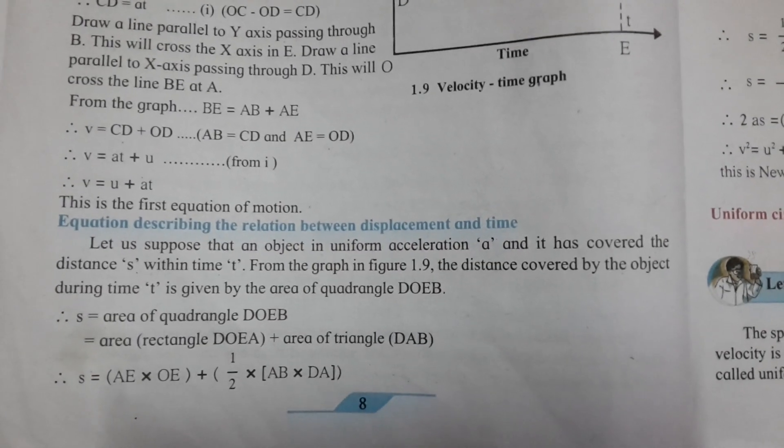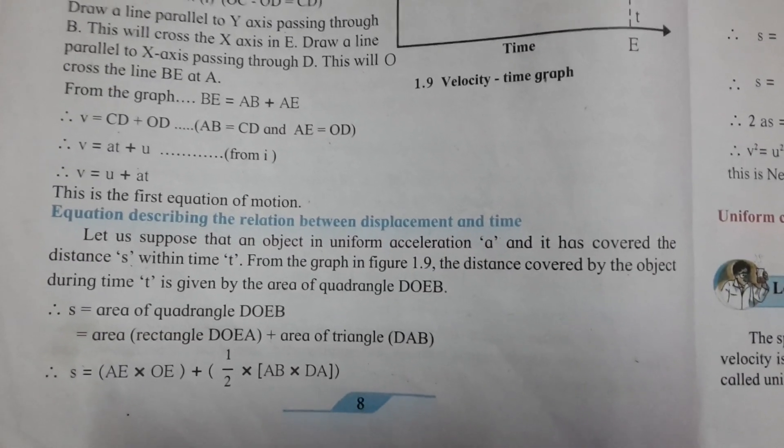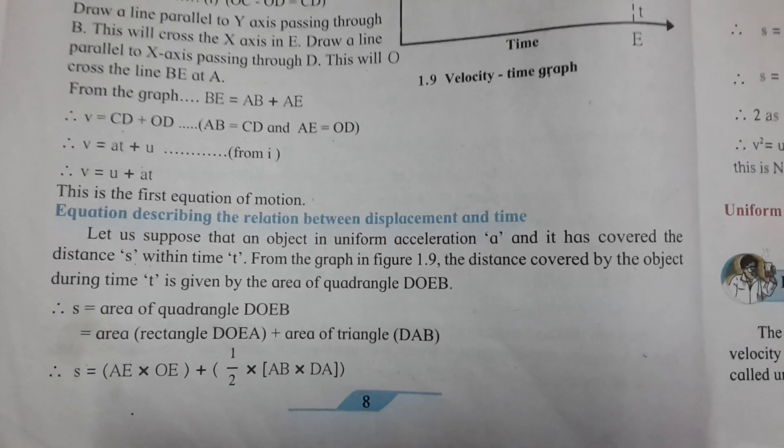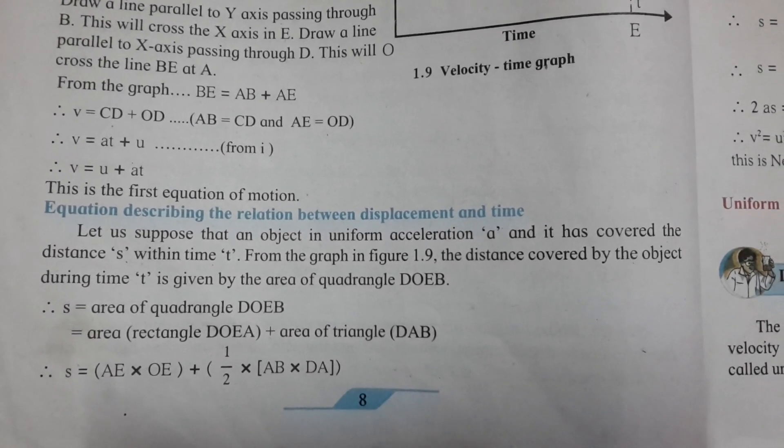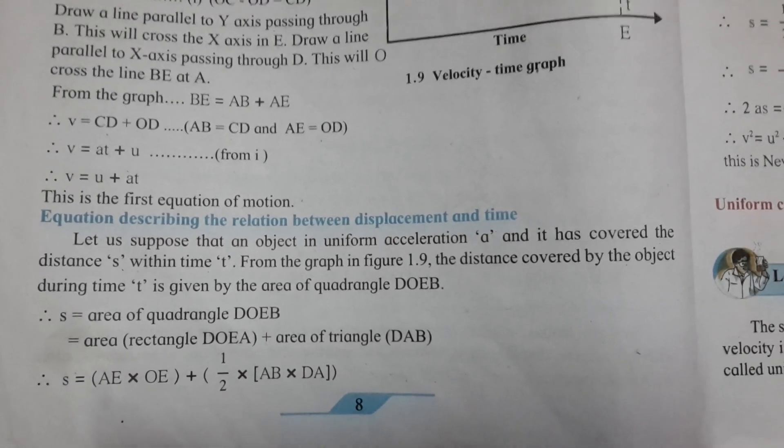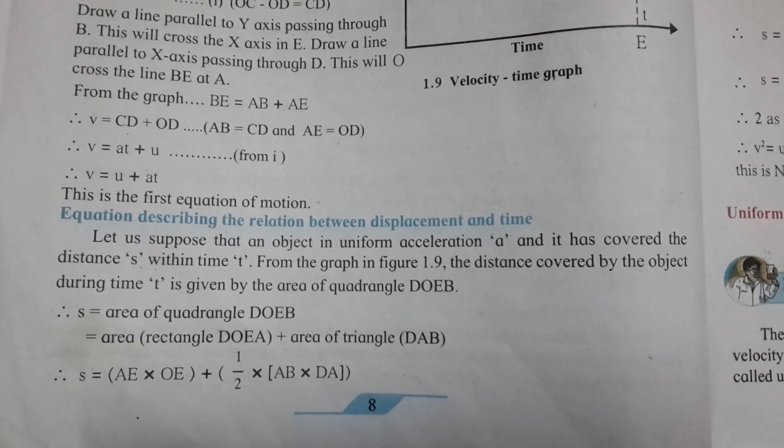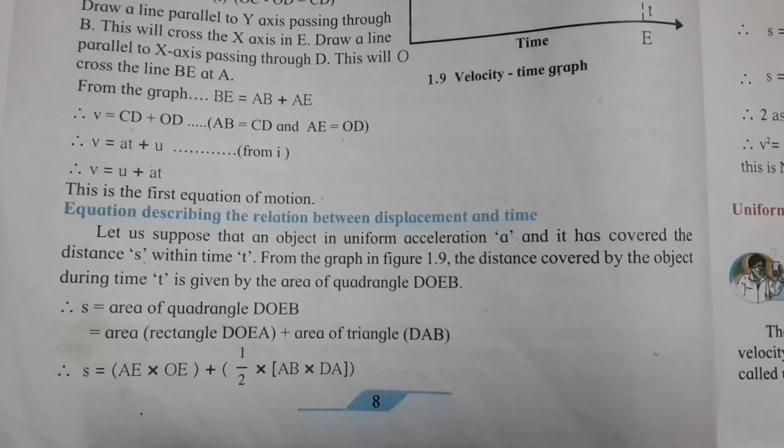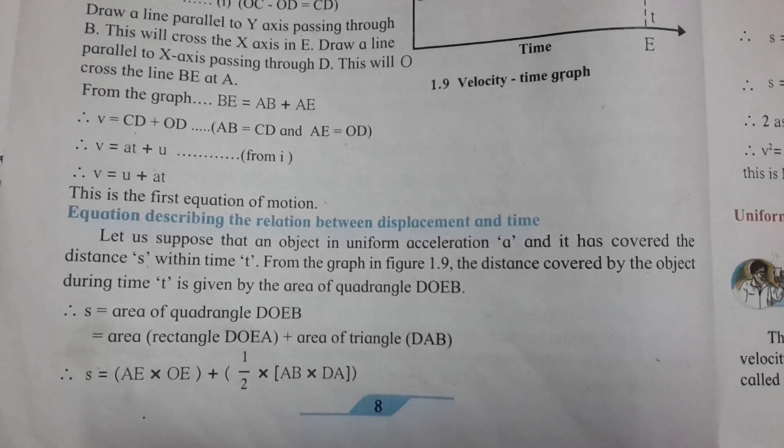Let us suppose that an object in uniform acceleration has covered the distance S within time T. From the graph, the distance covered by the object during time T is given by the area of quadrangle DOEB.